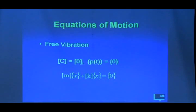The equations of motion get reduced to this form: mass matrix times the acceleration vector plus the stiffness matrix times the displacement vector equals a null vector—a vector of zeros.